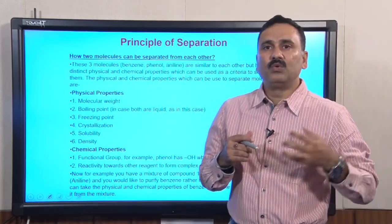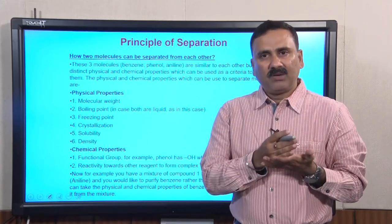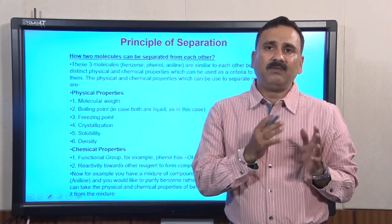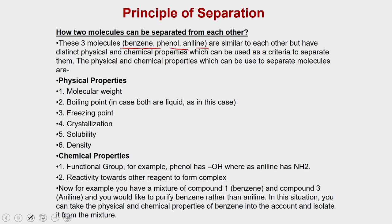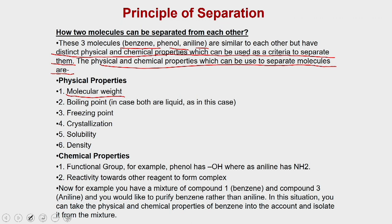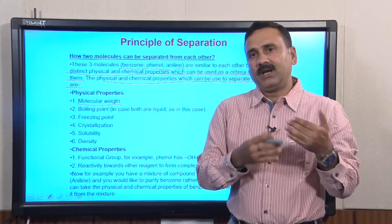This is actually the basis of how to separate molecules. If you would like to separate molecules, you have to know their physical properties, chemical properties, and biological properties when talking about proteins. These three molecules — benzene, phenol, and aniline — look similar but have distinct physical and chemical properties which can be used as criteria to separate them. For example, molecular weight can be exploited: if you want to purify a molecule of molecular weight 40, that will exclude all molecules above or below that value.